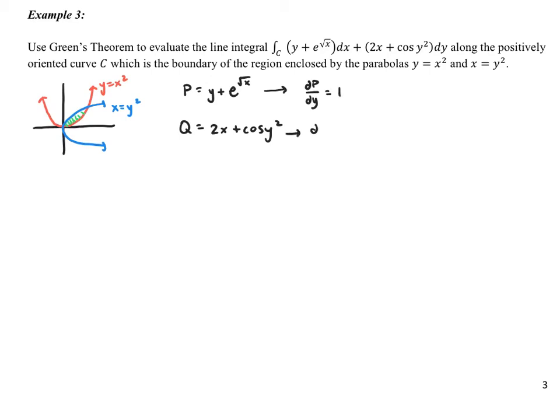However, Green's Theorem simplifies things down a lot. So we have the partial derivative of P with respect to y, which is 1, partial derivative of Q with respect to x, which is 2. So that means that simplifies quickly. We have x from 0 to 1,